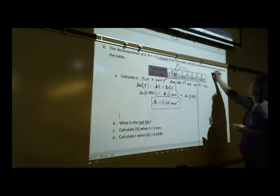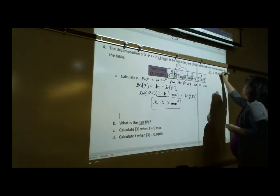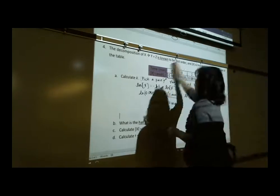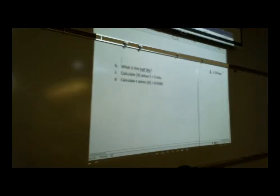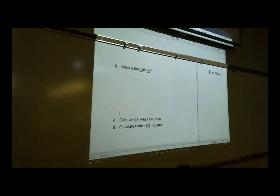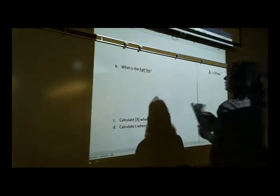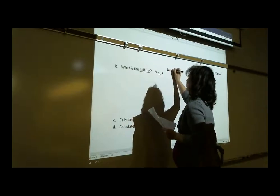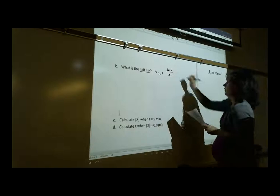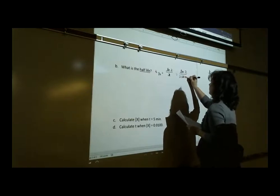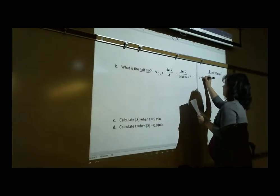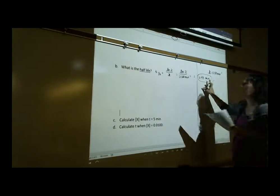Now we know k = 0.100 min⁻¹. For the half-life, because this is first order, the first order half-life is: t₁/₂ = ln(2) / k. That's on your reference page. So t₁/₂ = ln(2) / 0.100 min⁻¹ = 6.93 minutes. Remember, half-life is a unit of time.